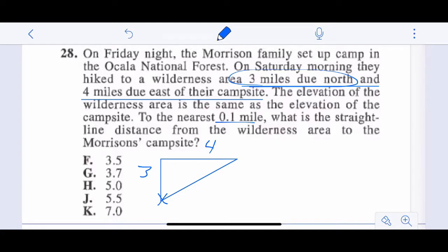So now if we know our Pythagorean triples, that's a 3, 4, 5 triangle. If you don't know your triples, you can do the Pythagorean theorem. Three squared plus four squared equals C squared. And you would get five. So the answer is H.